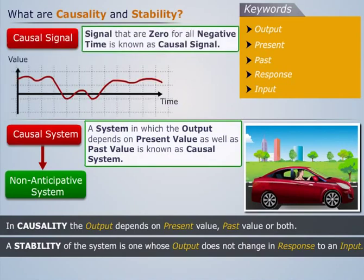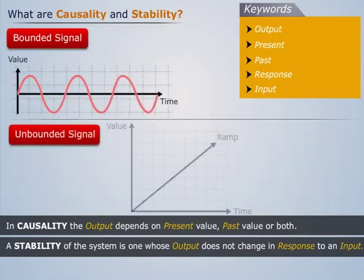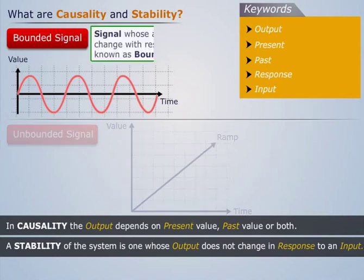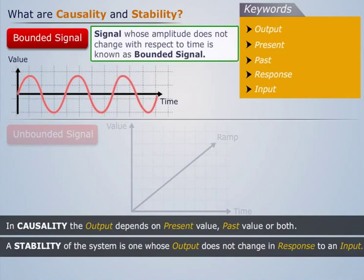Before discussing about stable system, we'll go through bounded and unbounded signals. Signal whose amplitude does not change with respect to time is known as bounded signal. Example: sine wave signal.